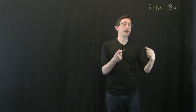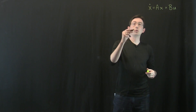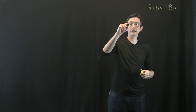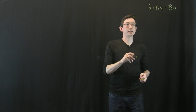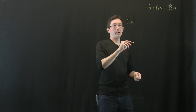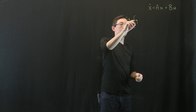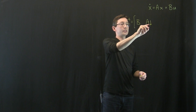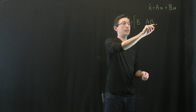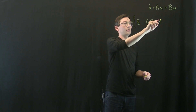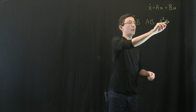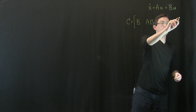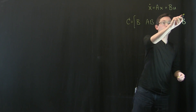Last time we arrived at this controllability matrix. Curly C is a matrix given by the columns in B, followed by the columns in AB, followed by the columns in A-squared B, all the way up to A to the n minus 1, B.